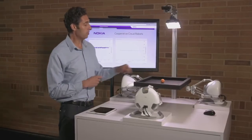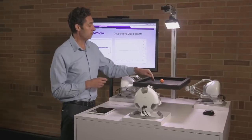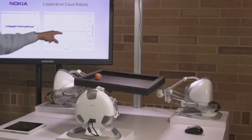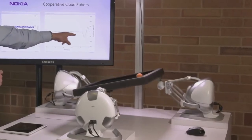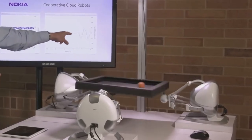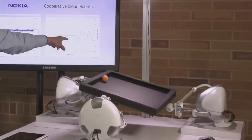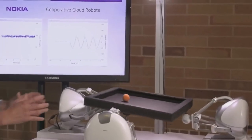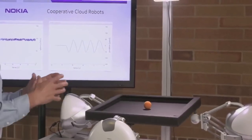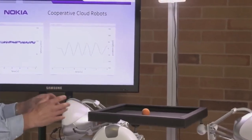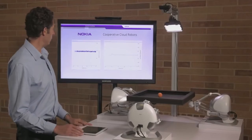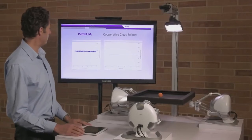I'm going to move this ball right now and we can see the oscillations tracked on this graph, and how long it takes for the robots to collaborate with each other to get the information they need to balance the ball on the plate. Then we're going to switch into 5G mode.